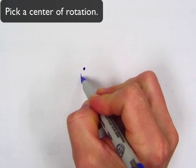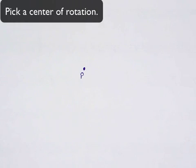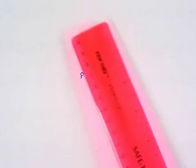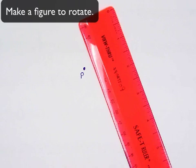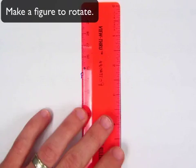And I'll just label this P for point of rotation. And now over here we can really make any shape we want to rotate. Why don't we do like a letter? Those are fun ones.